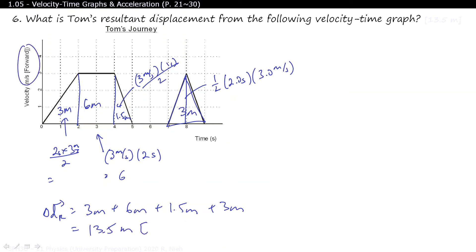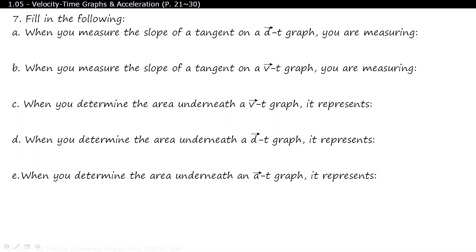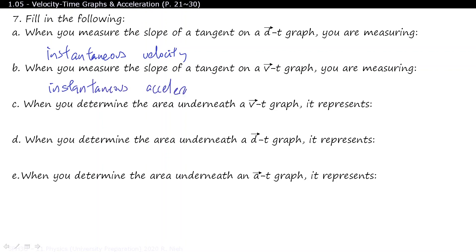Since velocity is in the forwards direction — above the time axis — all displacement values are positive, so the total displacement is also in the forwards direction. When you measure the slope of a tangent on a d-t graph, you are measuring the instantaneous velocity. When you measure the slope of a tangent on a v-t graph, you are measuring instantaneous acceleration. When you determine the area underneath the v-t graph, it represents displacement — which also means change in position.